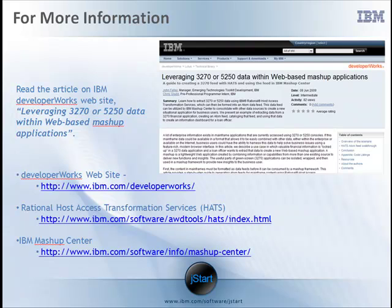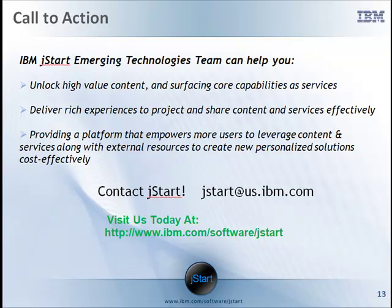For more information, please read the article on the IBM Developer Works website: leveraging 3270 or 5250 data within web-based mashup applications. This article provides a written step-by-step guide to create the 3270 feed using HATS that we showed in this video. We also provide detail of how to utilize this data feed within IBM Mashup Center. You can go to the Developer Works website at ibm.com/developerworks, and also you should look at the Rational Host Access Transformation Services information site, as well as the IBM Mashup Center web URL that is listed on this page.